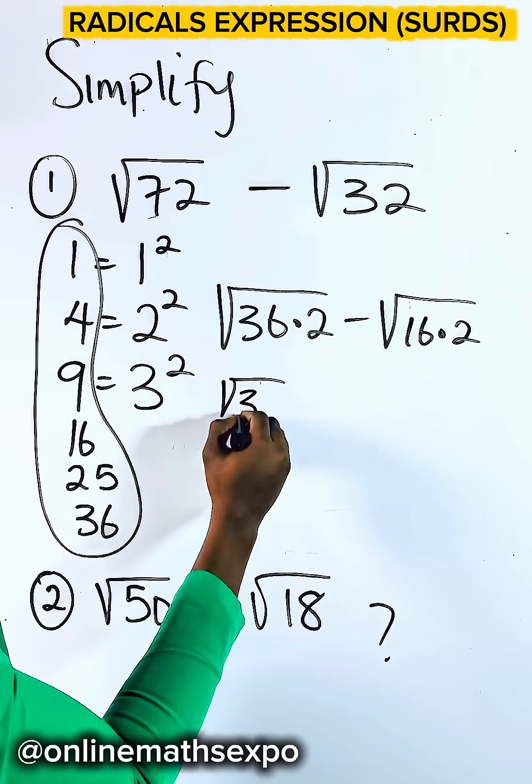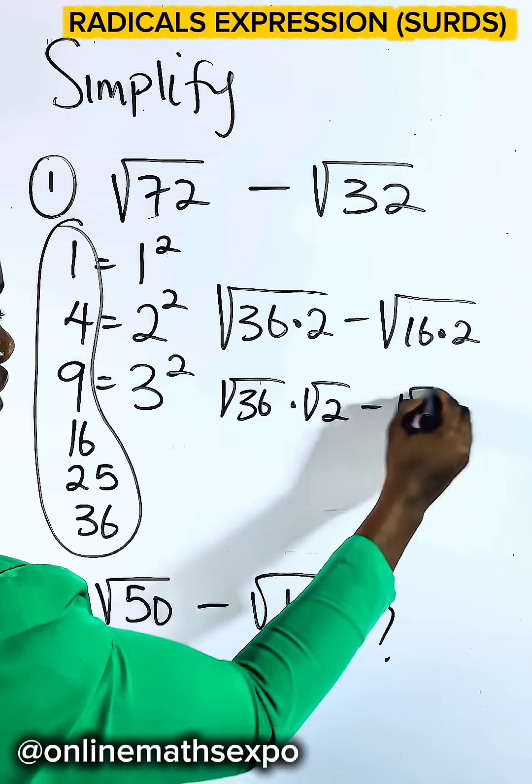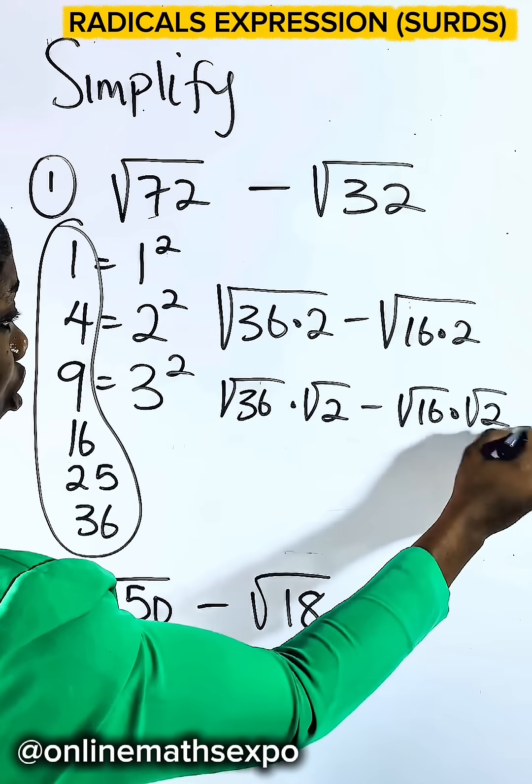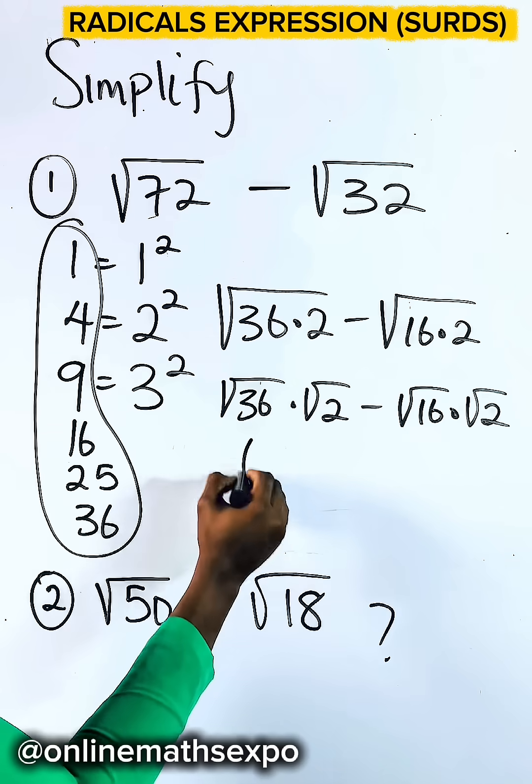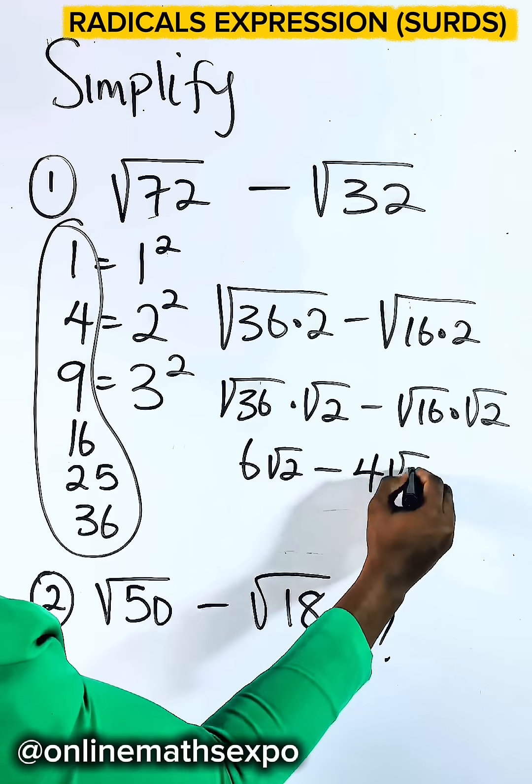Split it. You have root 36 times 2 minus root 16 times 2. Square root of 36 is 6 root 2 minus square root of 16 which gives you 4 root 2.